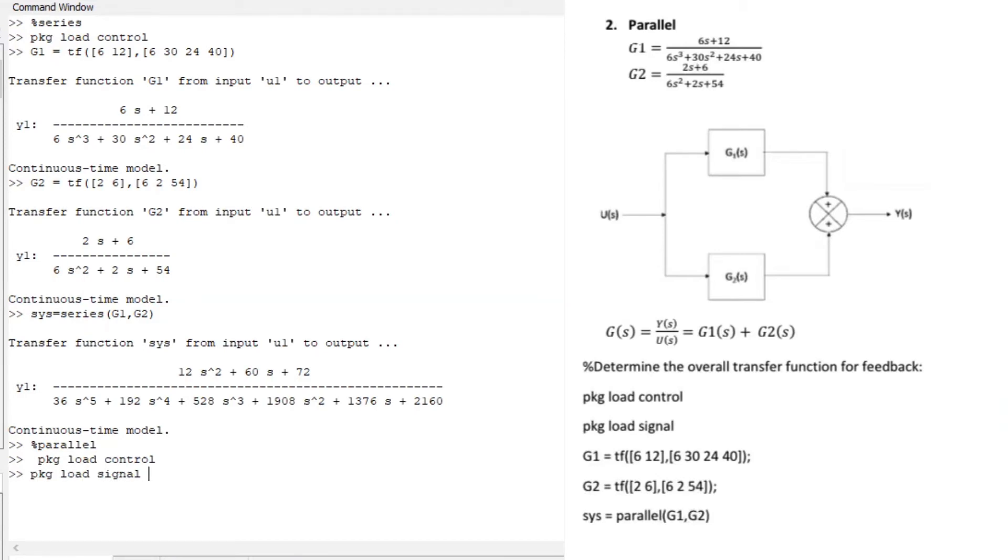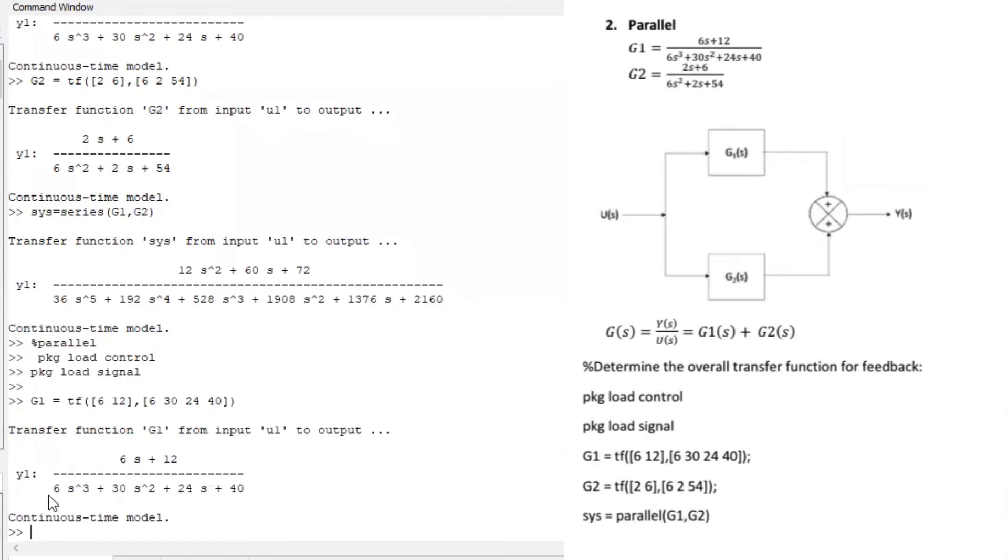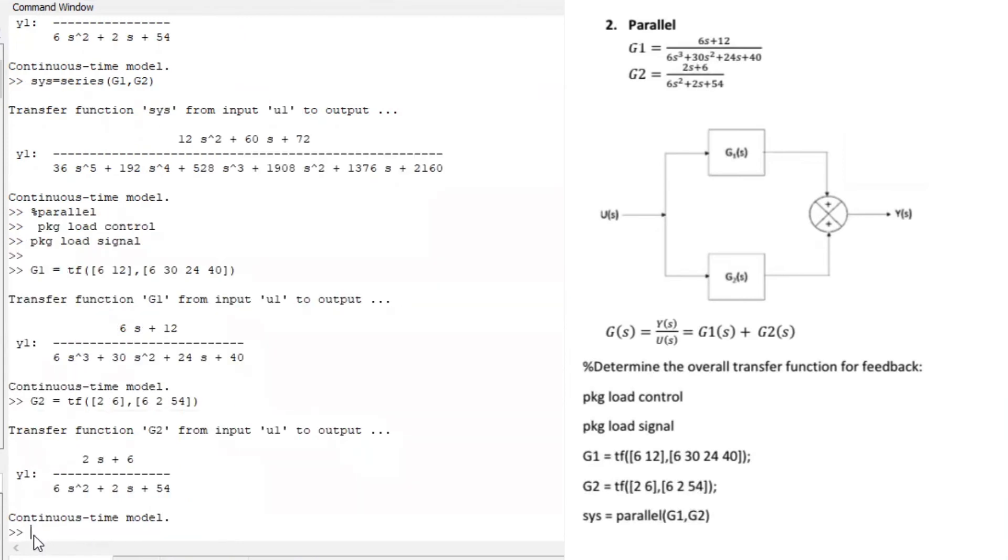So our first transfer function, that's it. I'm just going to copy and paste it. Paste, paste. There's our G1, G2. Perfect. Now I want us to find our system when it's operating in parallel.